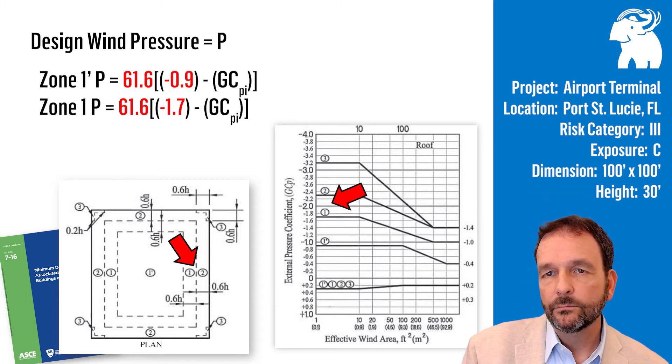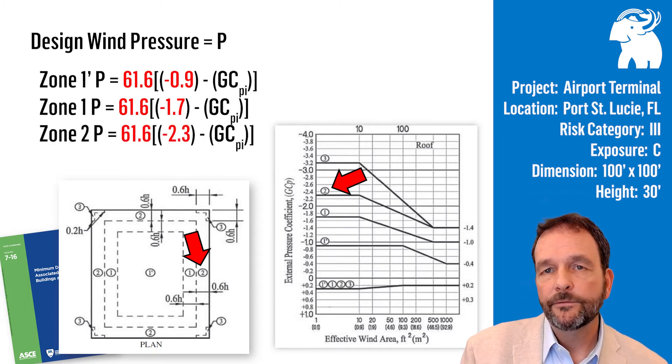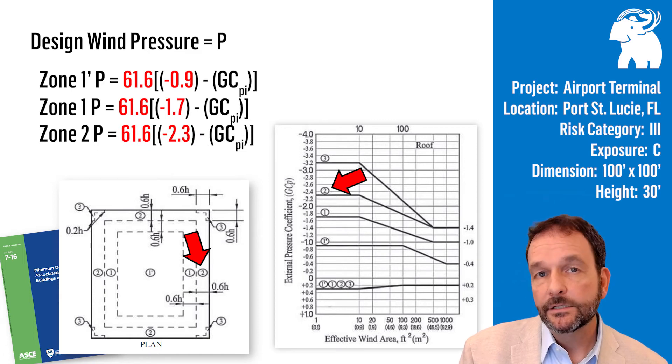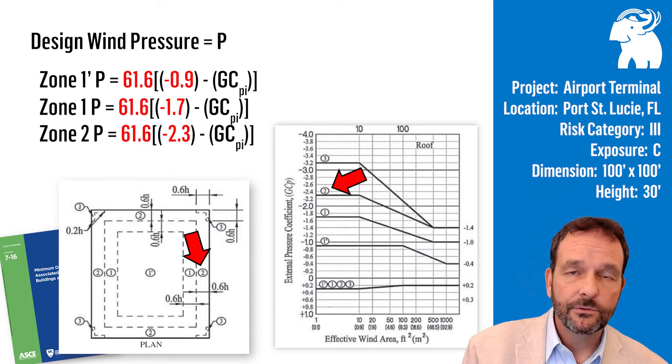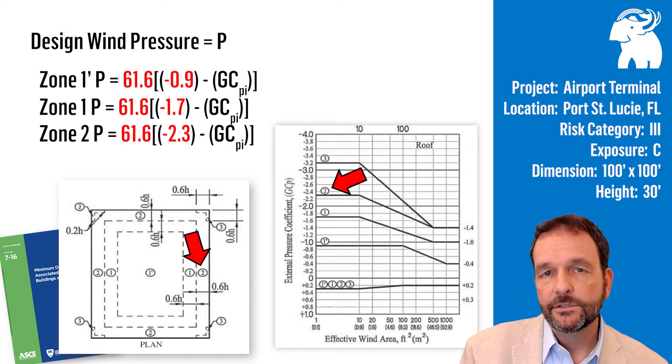Our next zone, zone 2, the outer perimeter of the roof. The coefficient is negative 2.3 for zone 2. The size of that zone is also 0.6 times the roof height. So another 18 foot along the edge of this roof.